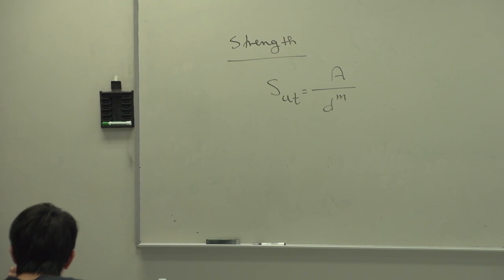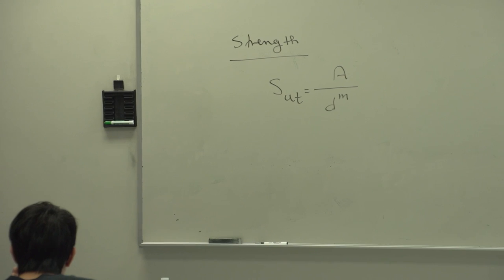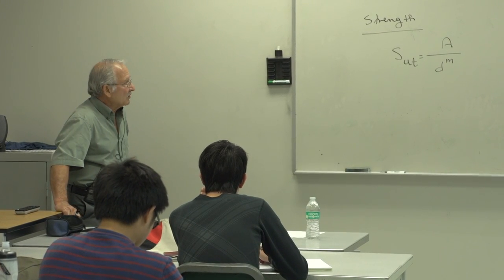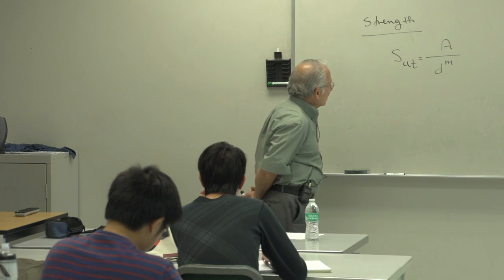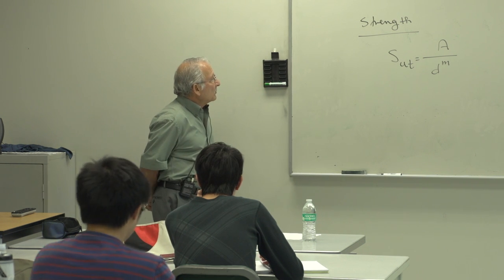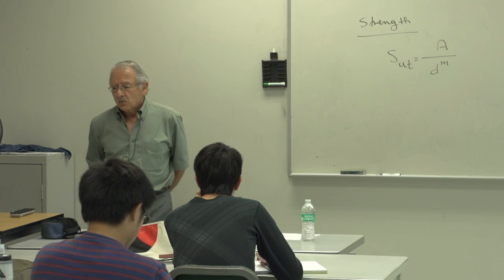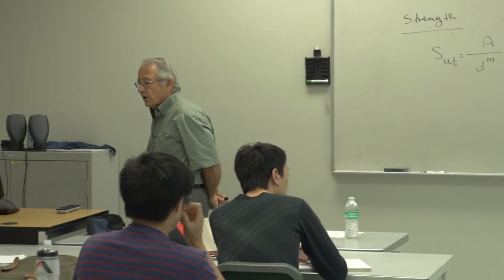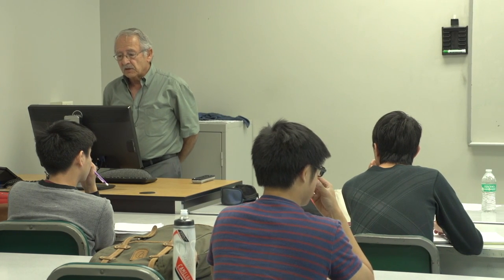If you plot this equation on a log-log scale, A becomes the intercept and M becomes the slope of the line — it will be the equation of a straight line, similar to S_F equals A times N to the B. We don't usually use this in log form. The two constants A and M are found from the table on screen, depending on the material. The constant M is the same in both unit systems; A is given for both. You simply refer to this table and find S_UT unless it is otherwise given.